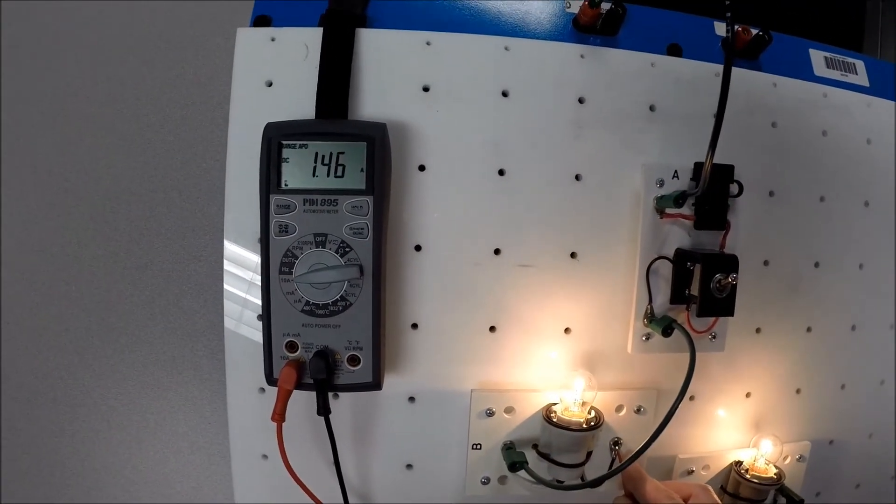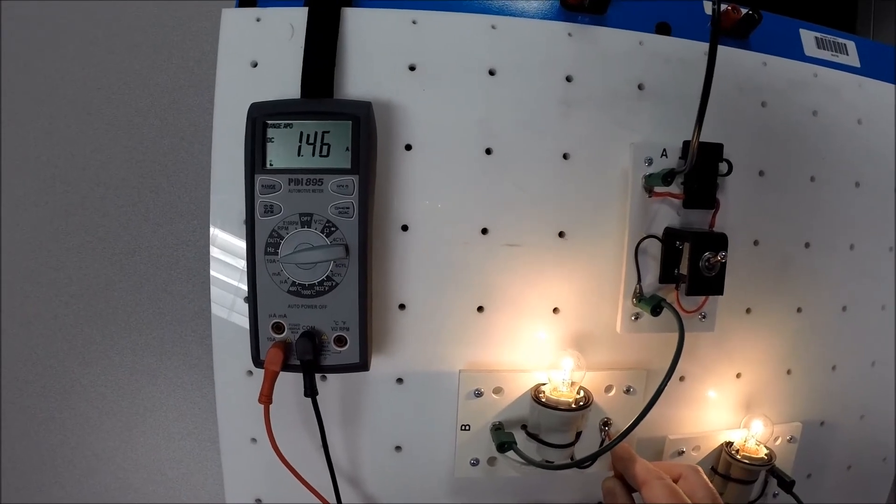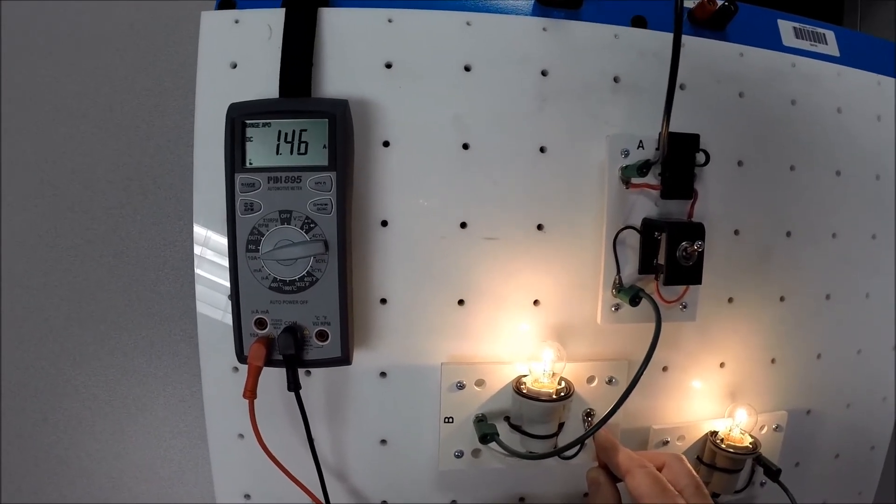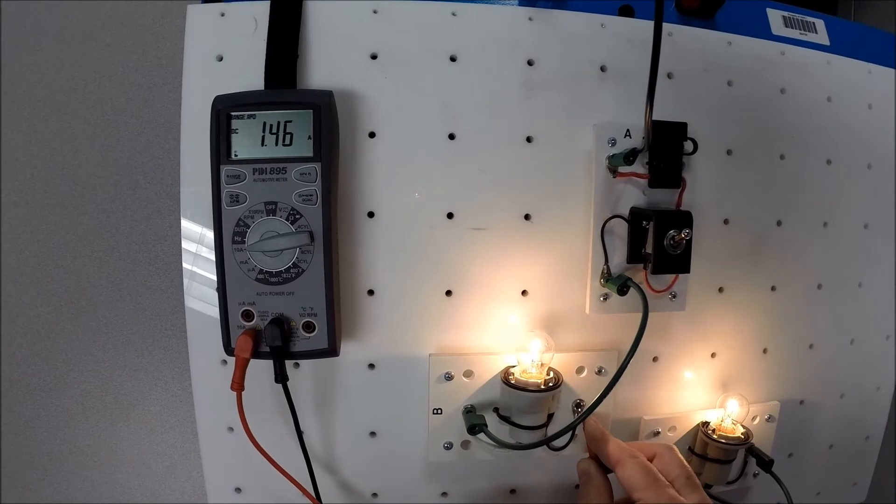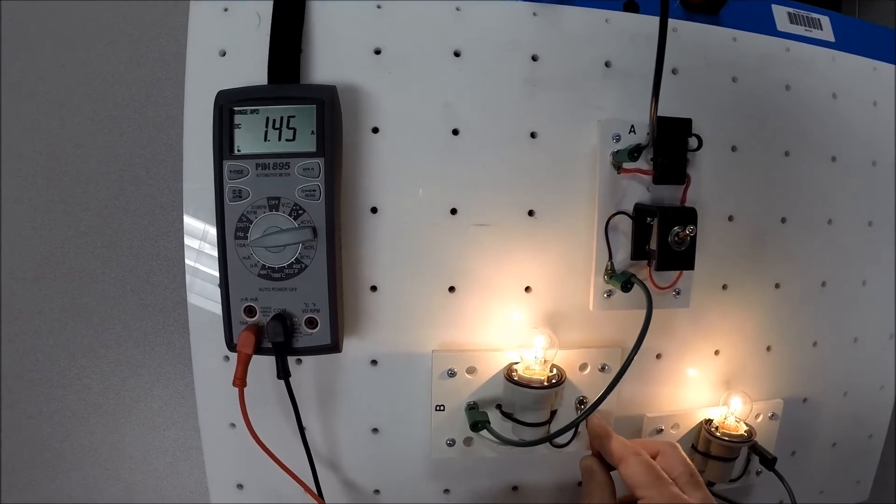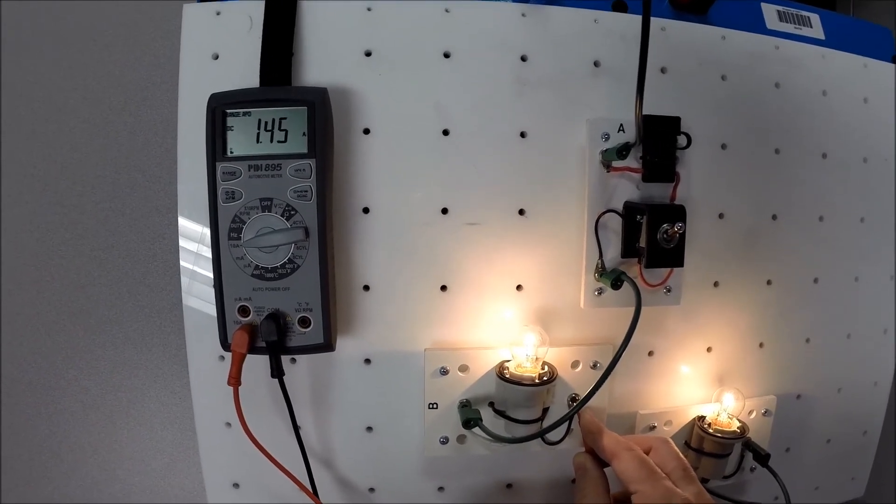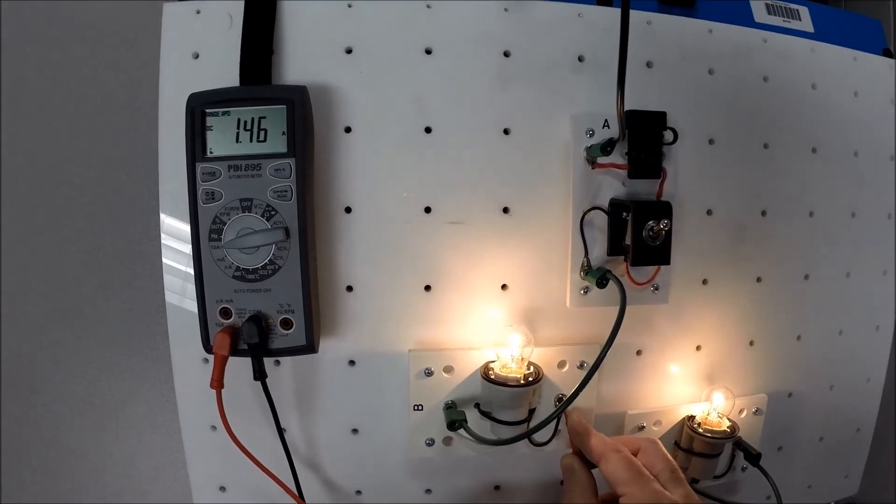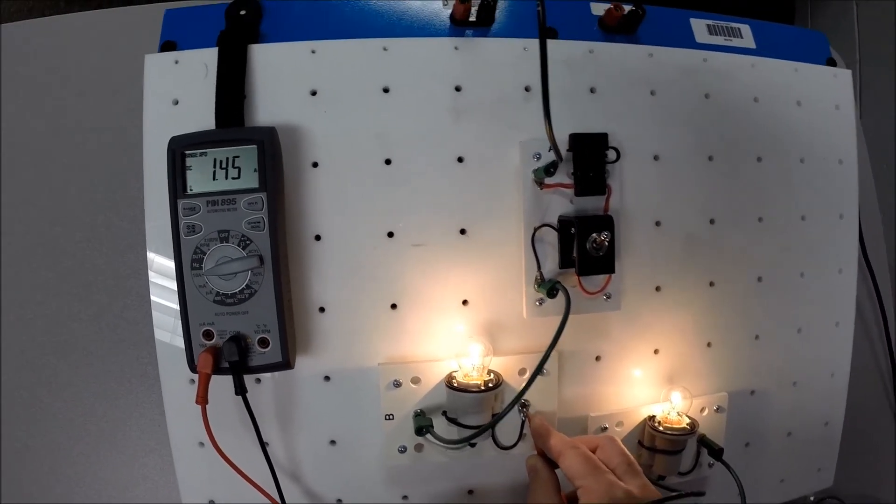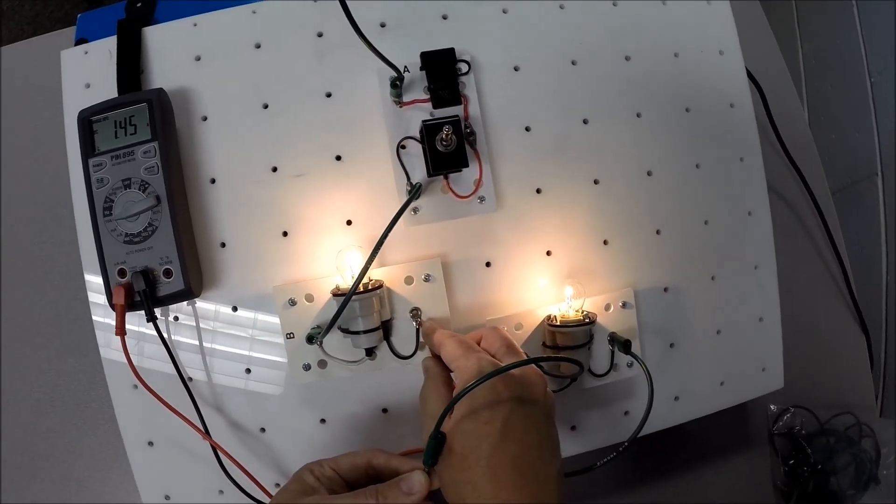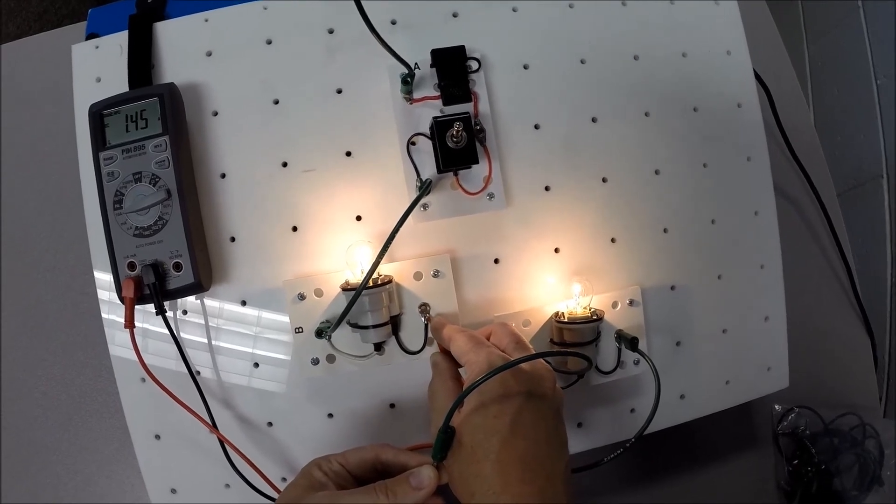So it doesn't matter where we measure current in a series circuit. And that's something that's important to remember. The rule for current draw in a series circuit is the same. Sorry, the rule is that current is the same no matter where it's measured in a series circuit. So that's an important thing to remember.